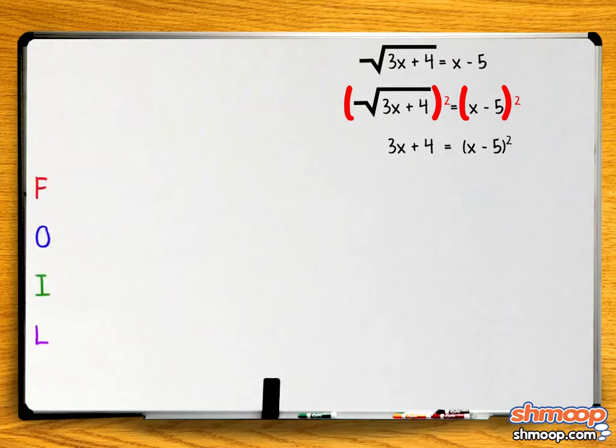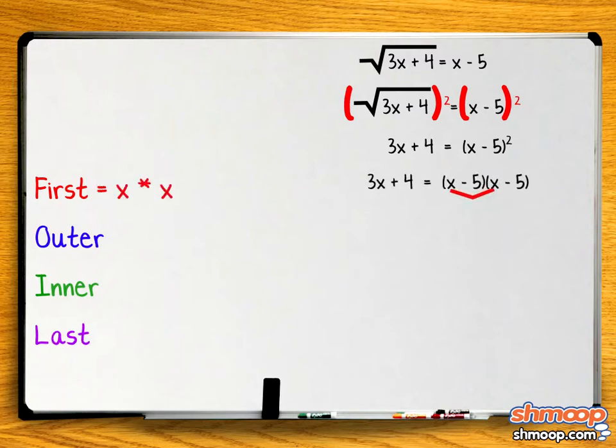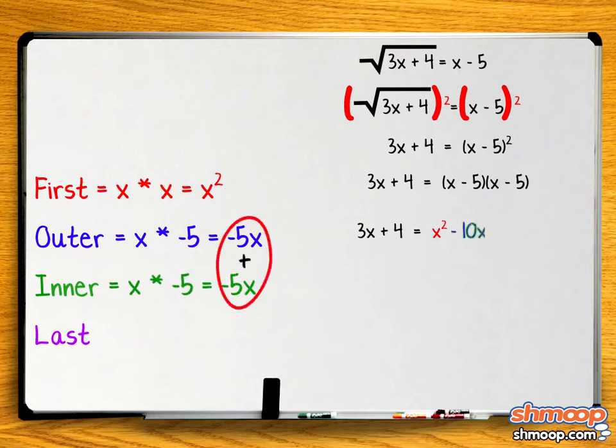Now we're going to use FOIL on the right side. We start by multiplying x by x, which gives us x squared. Then we multiply x by minus 5, and we get minus 5x. We continue by multiplying minus 5 by x to get minus 5x. And we finish by multiplying minus 5 by minus 5, which equals positive 25.